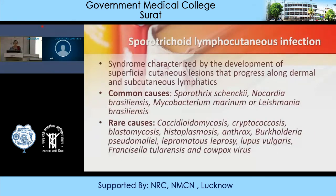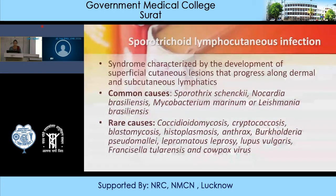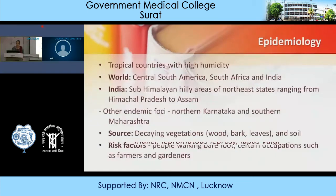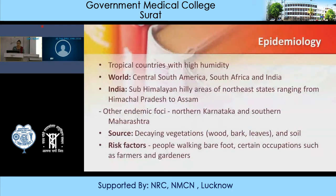Sporotrichoid lymphocutaneous infection is a syndrome characterized by development of superficial cutaneous lesions that progress along dermal and subcutaneous lymphatics. Causative agents can include Sporothrix, Nocardia, Mycobacterium marinum, and Leishmania braziliensis. Rare causes include Coccidioides, Cryptococcus, blastomycosis, histoplasmosis, anthrax, Burkholderia pseudomallei, lepromatous leprosy, and lupus vulgaris. Epidemiology: seen in tropical countries with high humidity — Central and South America, South Africa, and India, particularly South Himalayan hilly areas from Himachal Pradesh to Assam, northern Karnataka, and southern Maharashtra. Sources are decaying vegetables, wood, bark, leaves, and soil; farmers and gardeners walking barefoot are commonly affected.